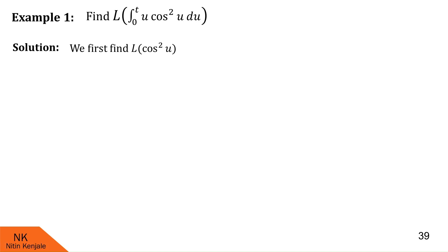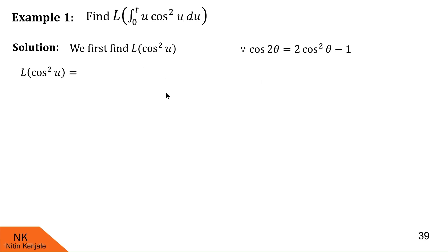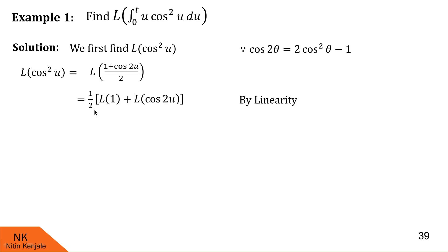To do that, I would like to recall the trigonometric identity of cos 2θ, which is 2cos²θ − 1. Therefore, cos²θ = (1 + cos 2θ)/2. So I can write L{cos²u} as L{(1 + cos 2u)/2}. By linearity property, this can be written as (1/2)[L{1} + L{cos 2u}].